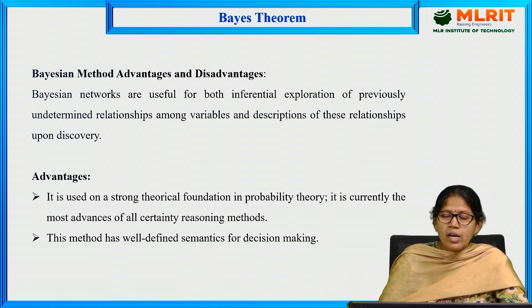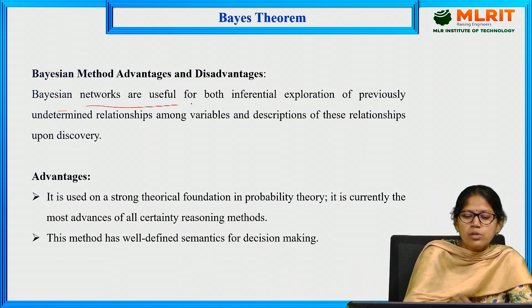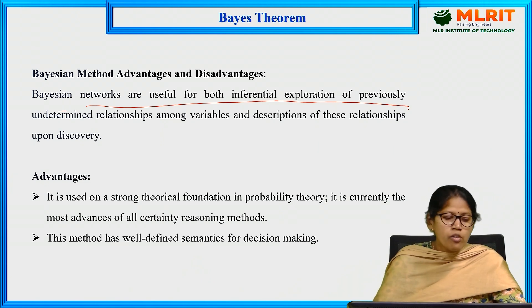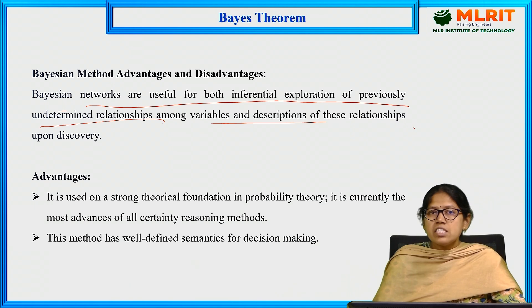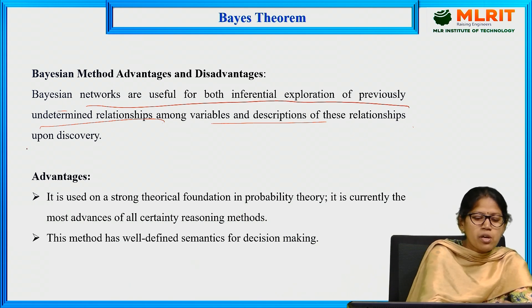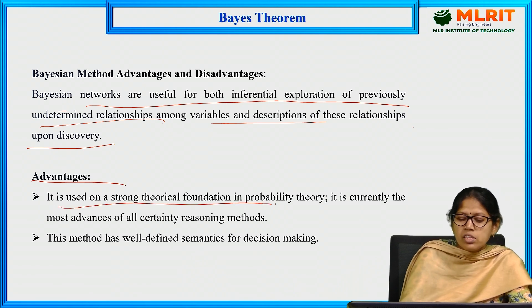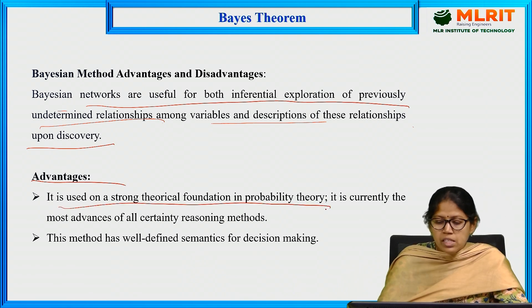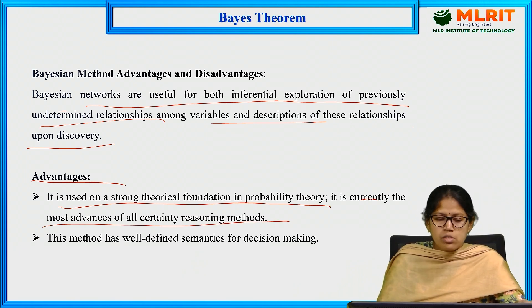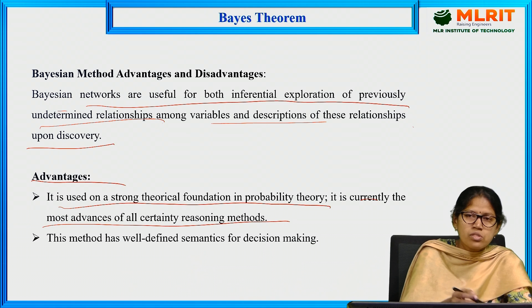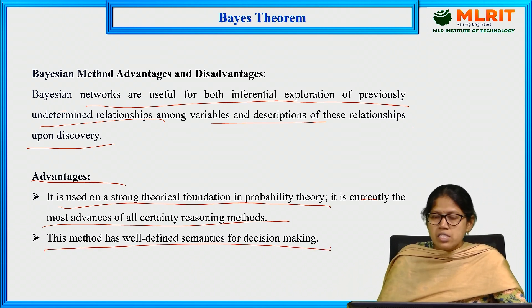Let us see the advantages and disadvantages of the Bayesian method. Bayesian networks are useful for both inferential exploration of previously undetermined relationships among variables and discrimination. The advantages are: it is based on a strong theoretical foundation in probability theory; it is currently the most advantageous of all uncertain reasoning methods. To find out uncertainty in knowledge, we use this Bayesian method, which has well-defined semantics for decision making.